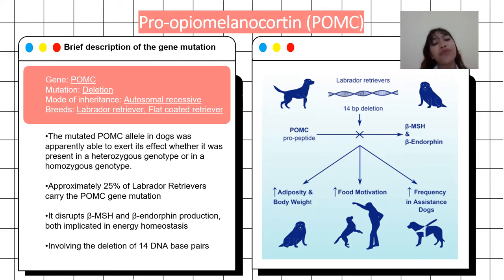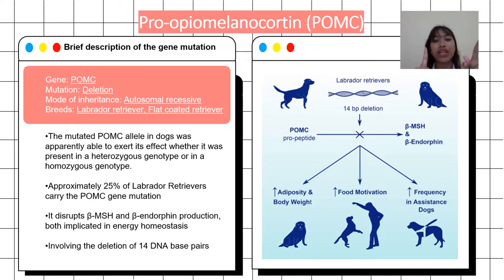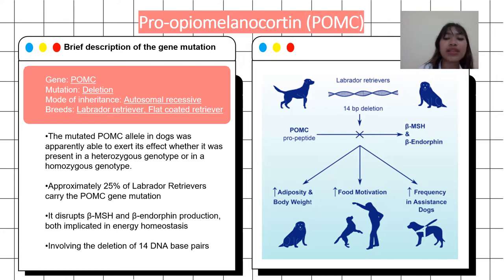The breed that is affected is the Labrador retriever or the flat-coated retrievers. The mutated POMC gene in the dog is able to exert its effect whether it was present in heterozygous genotype — one normal and one mutated version — or in homozygous genotype, which is two mutated forms. Approximately 25% of Labrador retrievers carry the POMC gene mutation.